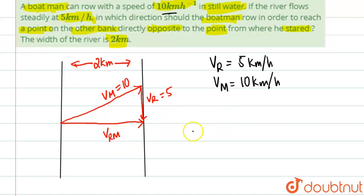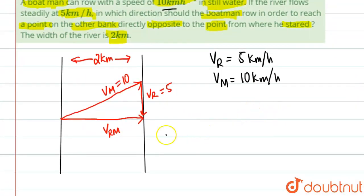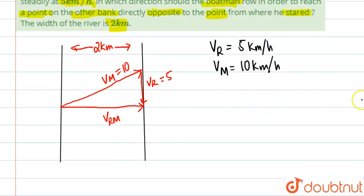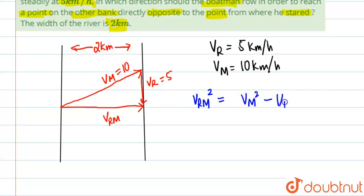Since no compass directions like east, west, north, or south are given, we'll write the answer in terms of cos theta or tan theta format. We'll use the Pythagorean theorem: vrm² = vm² − vr². You can see in the diagram what's happening — the resultant vrm must be less than vm, and vm must be greater than vr.